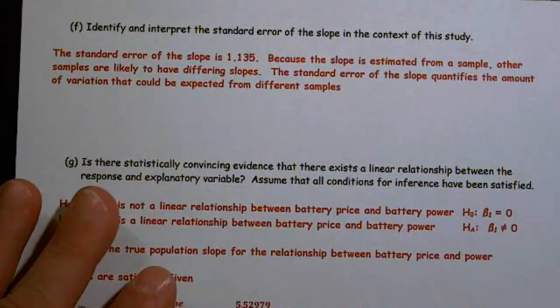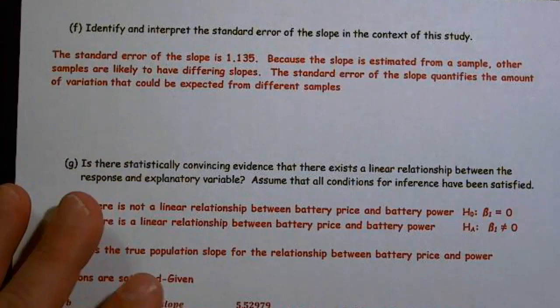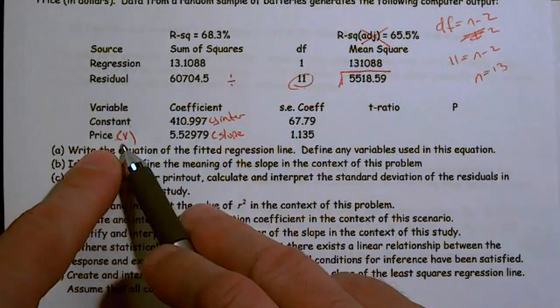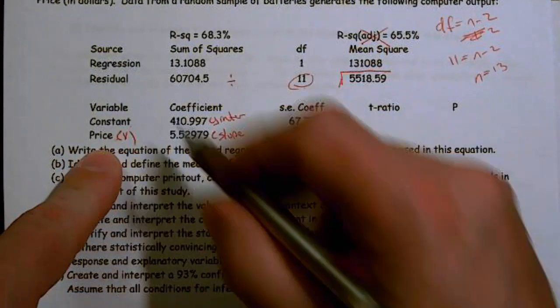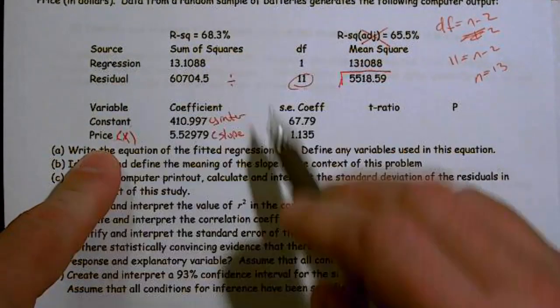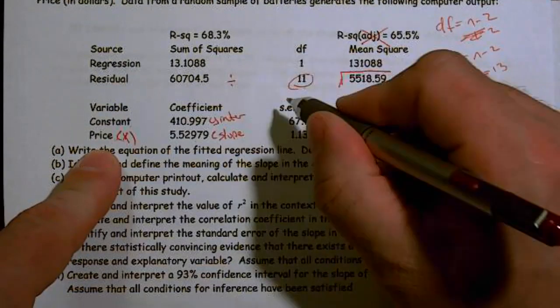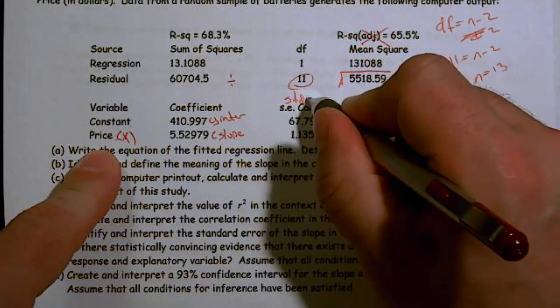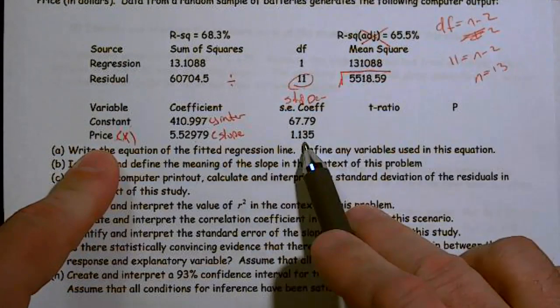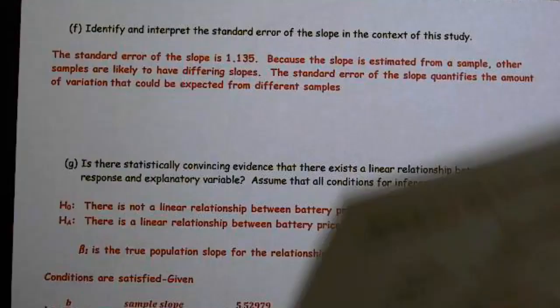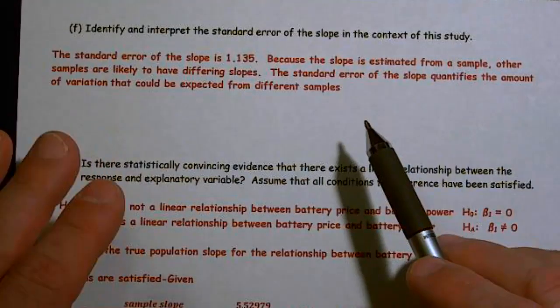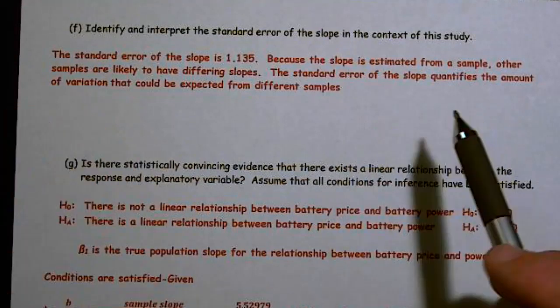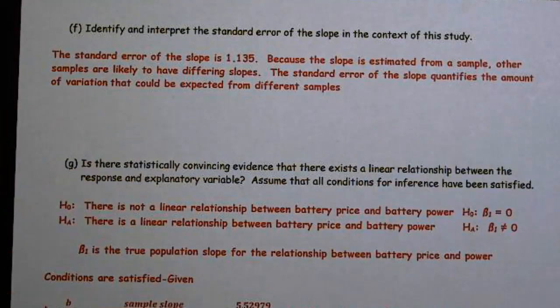Part F, identify and interpret the standard error of the slope. Well, the standard error of the slope is always going to be on the X line. So here's our X line. And it's always going to say either standard error or it could say standard deviation. Standard error is more correct, but it could say standard deviation. In this case, it's 1.135. So the standard error of the slope was 1.135.